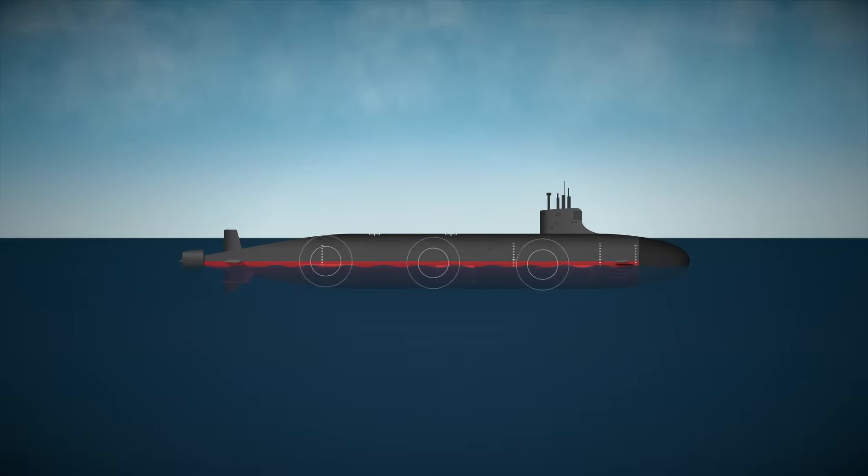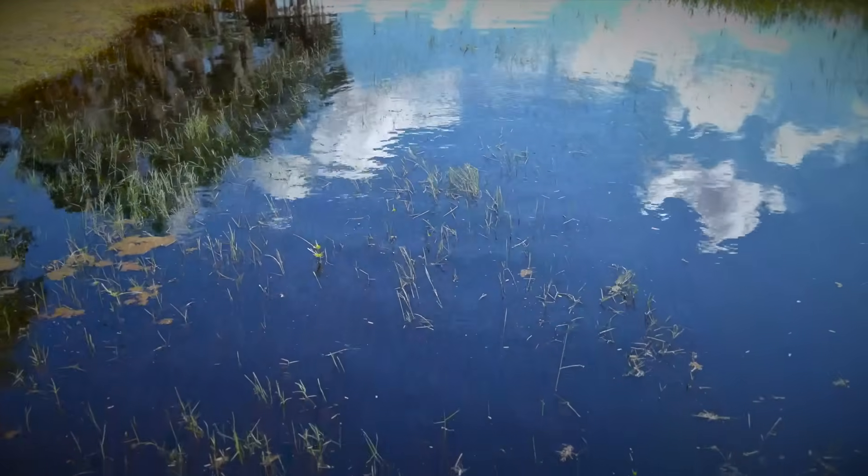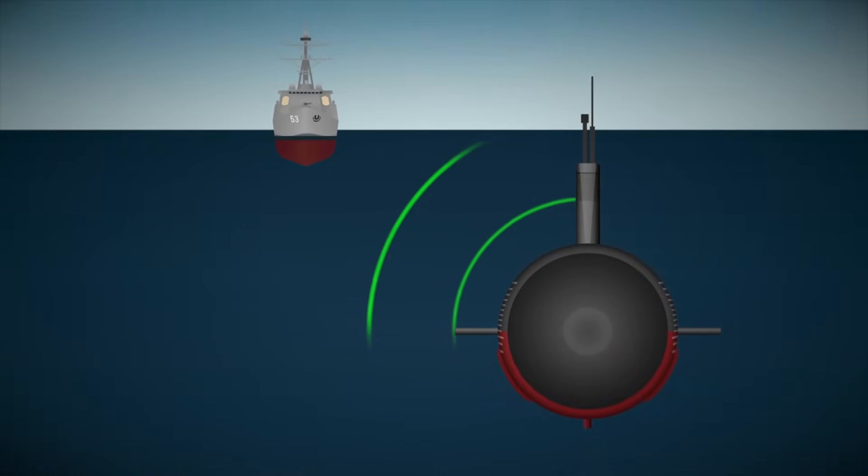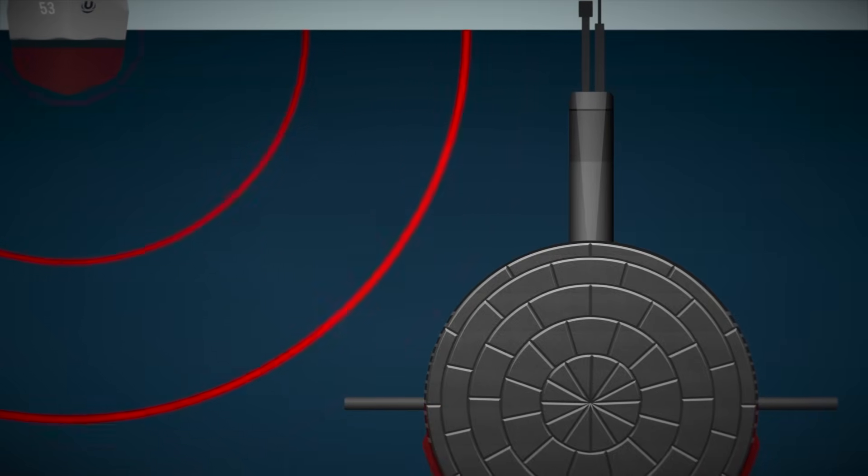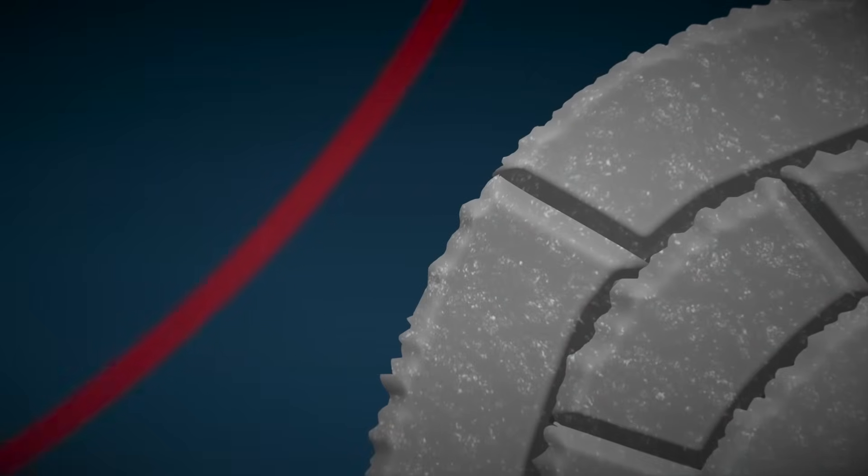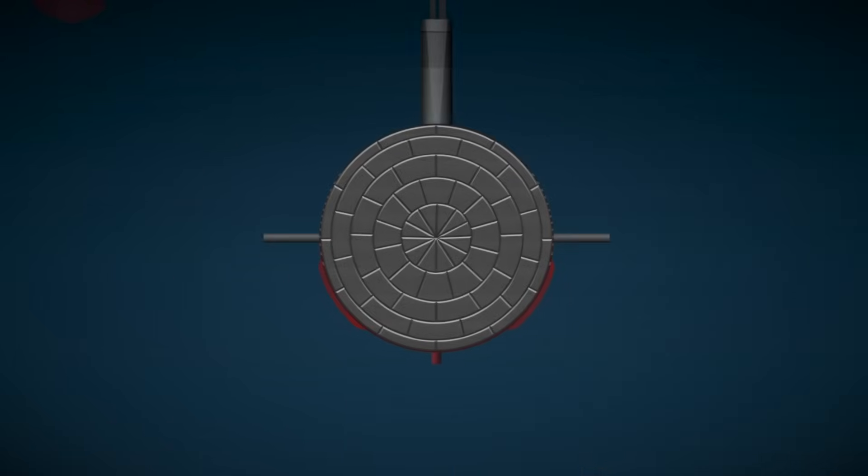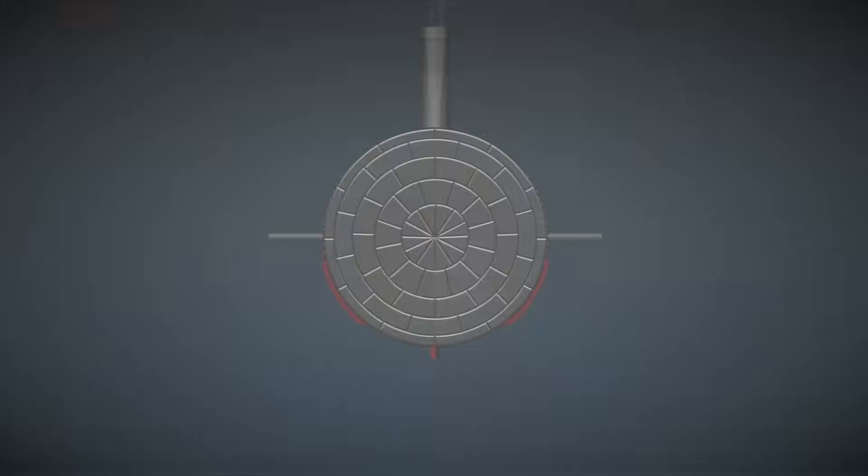Their job is twofold. They keep the submarine's noise from escaping into the water, and they disrupt and absorb incoming sonar pings, making it harder to detect active scans. Think of sonar waves like ripples on a pond. When they hit a flat metal surface, they bounce back sharply, making the submarine easier to find. But when those waves hit the uneven, rubbery surface of the anechoic tiles, they get scattered, absorbed, and weakened. Some of that energy even turns into tiny amounts of heat, while some gets lost inside the material.